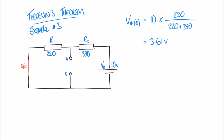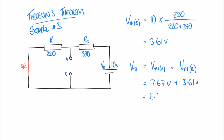Finally, my total Thevenin voltage VTH is equal to VTH(A) plus VTH(B). VTH(A) was 7.67 volts, and VTH(B) was 3.61 volts, which gives me a total Thevenin voltage of 11.28 volts. So we've calculated our Thevenin voltage using the idea of superposition — dealing with one power supply, then the other, and adding the results together. That's step one of Thevenin's theorem: determining the voltage across the output terminals.